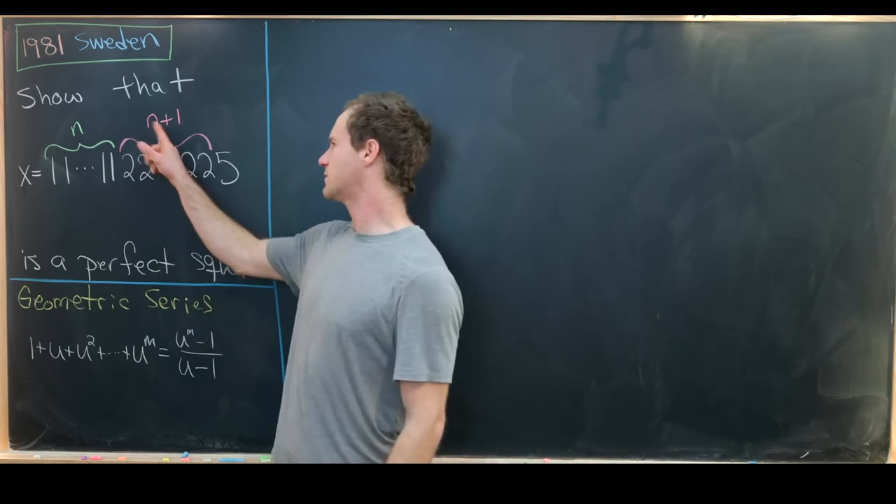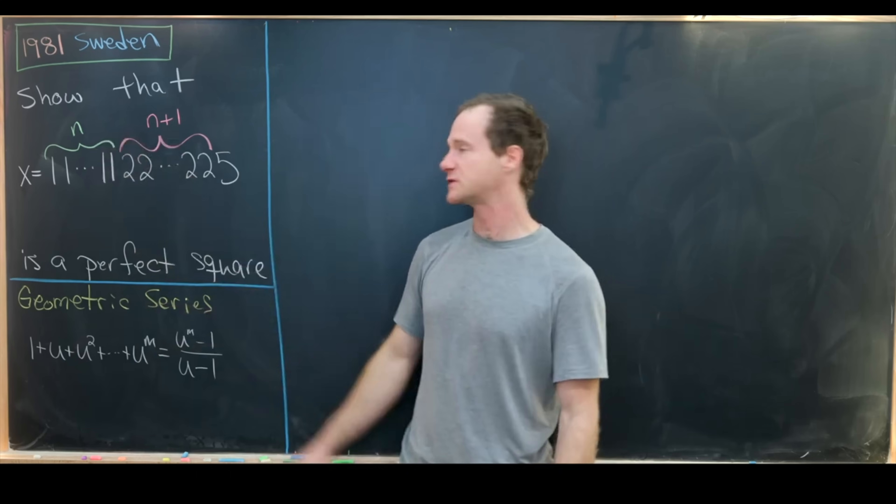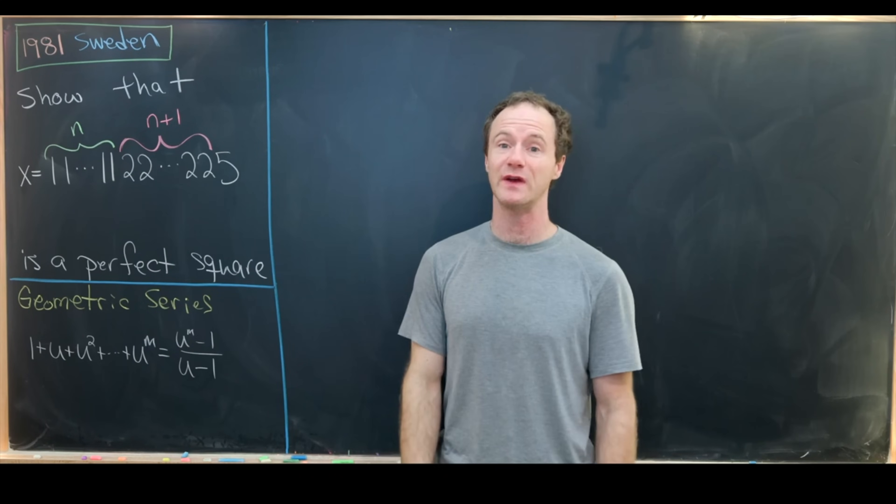So let's see, there are going to be n+1 plus n, so 2n+1 plus another, so there are 2n+2 total digits.